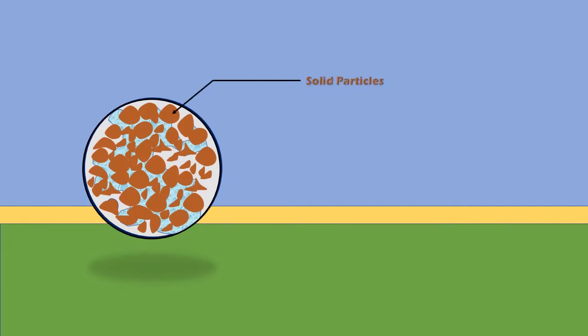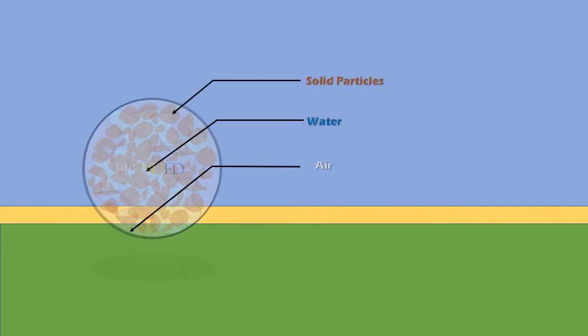So in general, we can say that a soil mass consists of solid particles, water, and air.